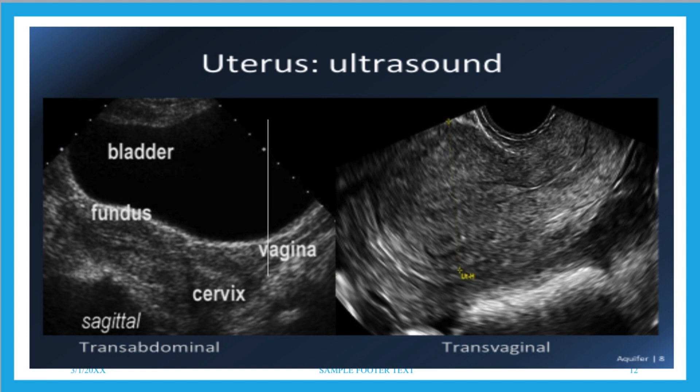We can identify a transabdominal ultrasound by the following characteristics: a curvilinear probe against the skin, then the abdominal wall, then the bladder, then the uterus. A transabdominal ultrasound allows for good penetration but less resolution, and gives us a larger field of view — useful in cases of large fibroids or pelvic masses.